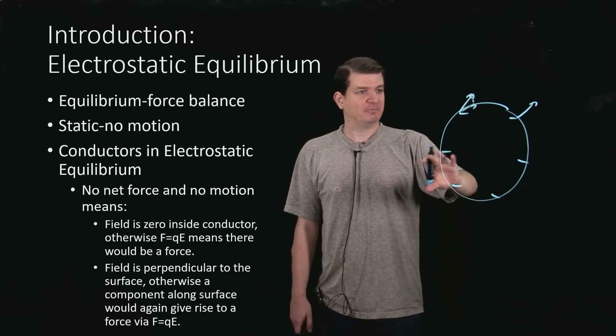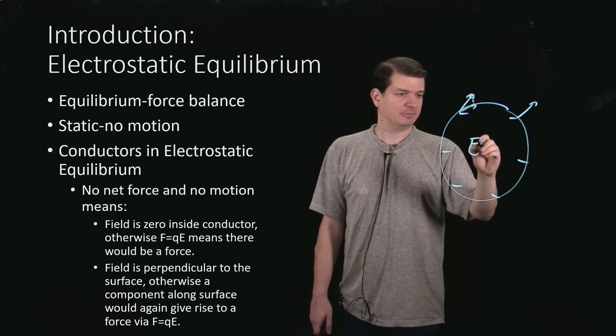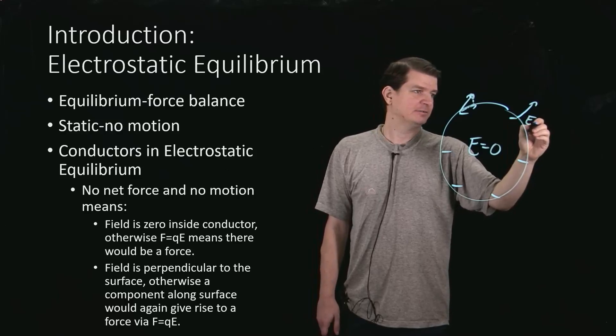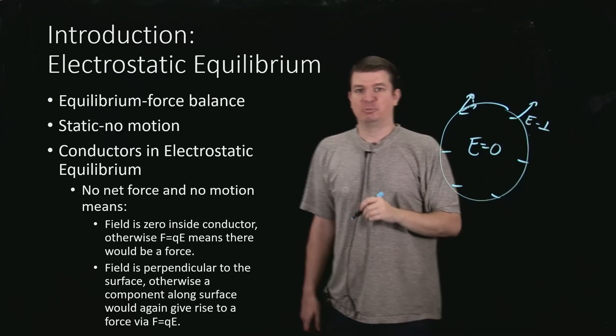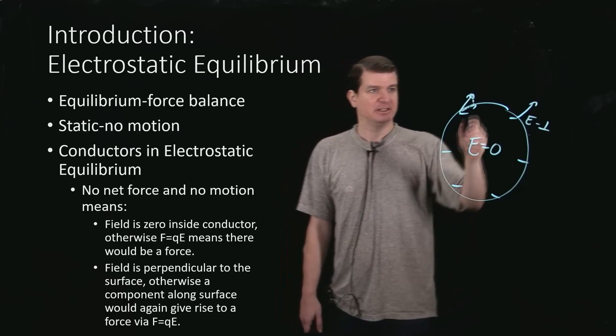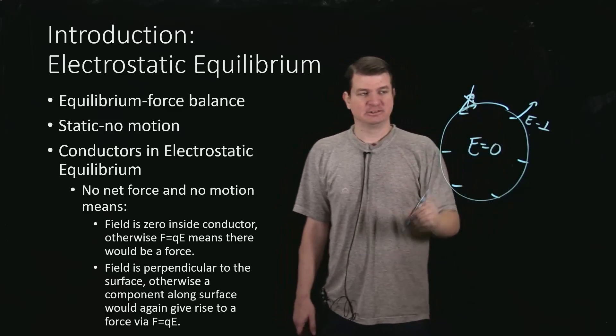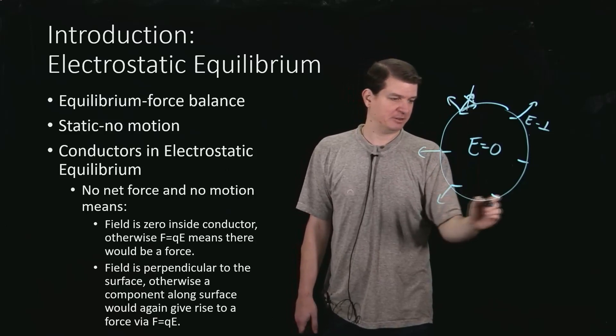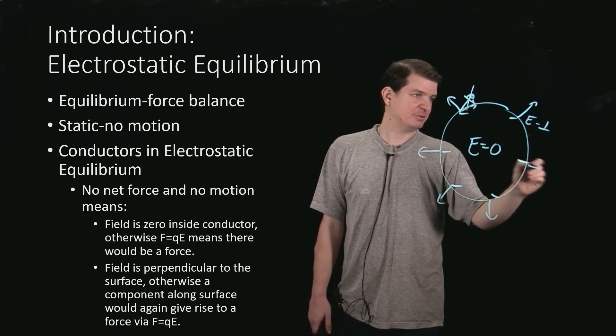So the field inside is zero, and the field out here, E, is always perpendicular to the surface. So that is wrong, and it must be looking perpendicular everywhere. That just means basically coming radially outward.